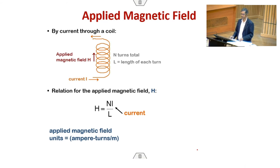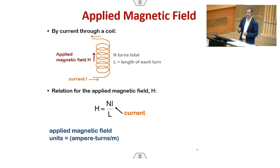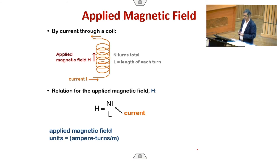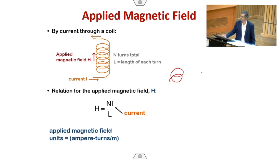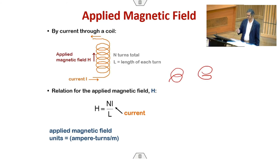Now, the effect of applied magnetic field. If current I passes through a coil of N turns and length L, the applied magnetic field H = NI/L. According to Faraday's law, any current-carrying coil has an associated magnetic field, which depends on number of turns, length per turn, and current.